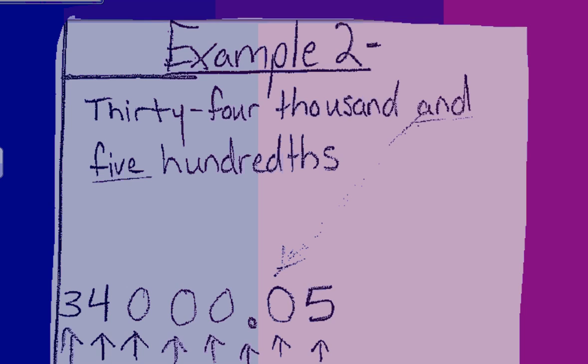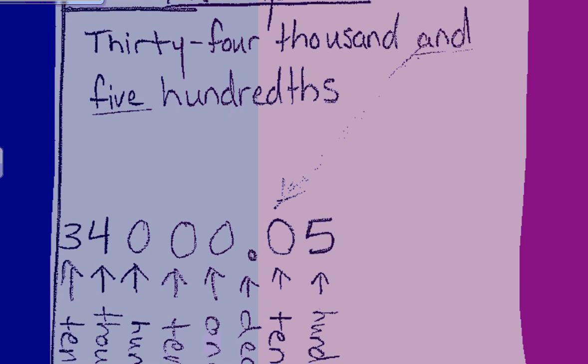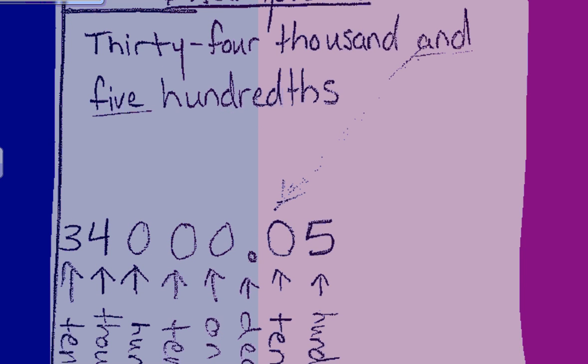If we have numbers to the left of the decimal and to the right of the decimal, we can use our step-by-step process once again. Finding the word AND and placing a decimal in its place.